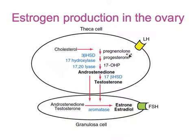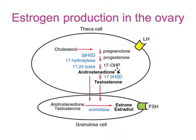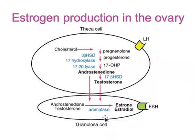To summarize: in the theca cells, LH stimulates the conversion of cholesterol down to androstenedione. Androstenedione can either be converted to testosterone or directly diffuse into the nearby granulosa cell. FSH then stimulates expression of the aromatase enzyme, which converts androstenedione or testosterone into estrone and eventually into estradiol.